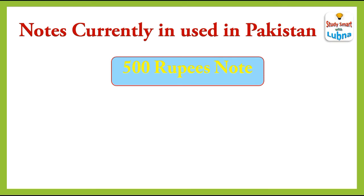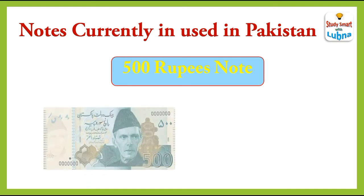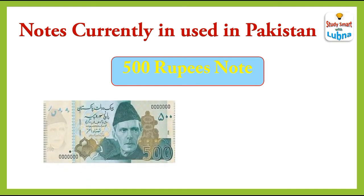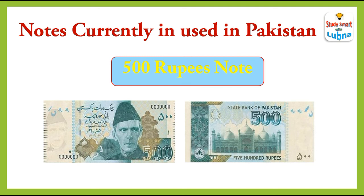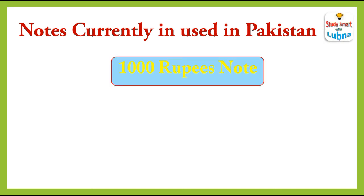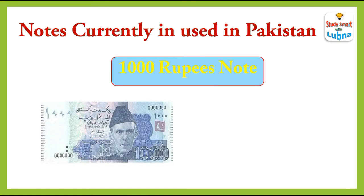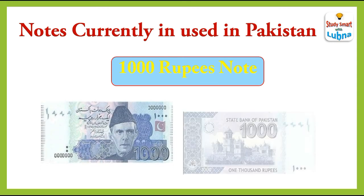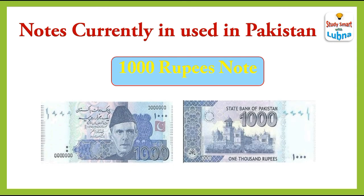Five hundred rupees note: this is the front side of five hundred rupees note and this is the back side of five hundred rupees note. Thousand rupees note: this is the front side of thousand rupees note and this is the back side of thousand rupees note.